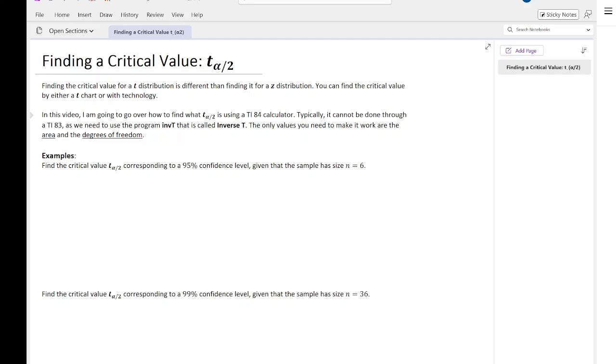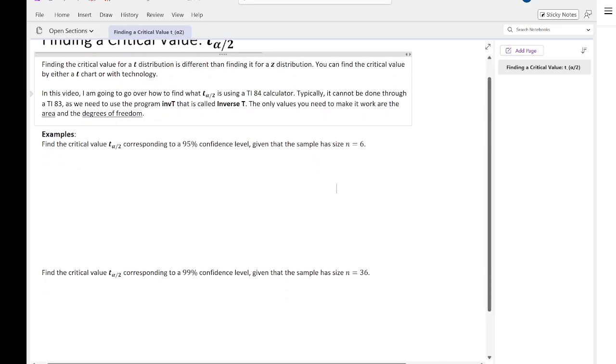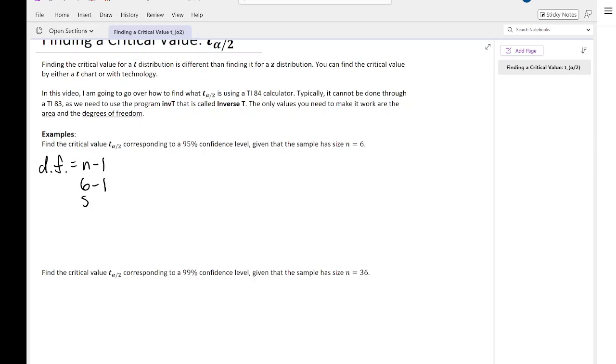Let's look at this first example. Find the critical value T alpha over 2 corresponding to a 95% confidence level given that the sample size is 6. The degrees of freedom, df, is n minus 1, so it's going to be 6 minus 1, which is 5.